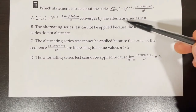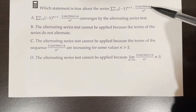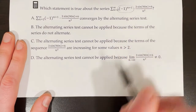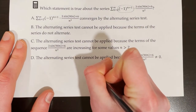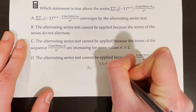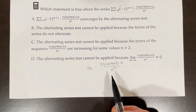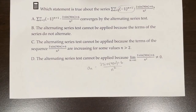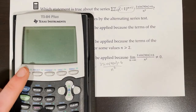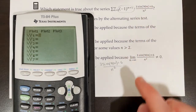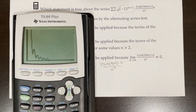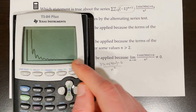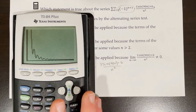Which statement is true about the series from n equals 2 to infinity of negative 1 to the power of n plus 1 times 3 sine of 90n plus 6 over n squared? This is an alternating series because of negative 1 to the power of n plus 1. The a sub n is 3 sine of 90n plus 6 over n squared. To apply the alternating series test, we need the limit of a sub n to equal 0 and a sub n to be non-increasing. We can use the graphing calculator to graph this function.